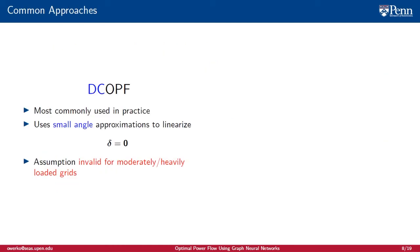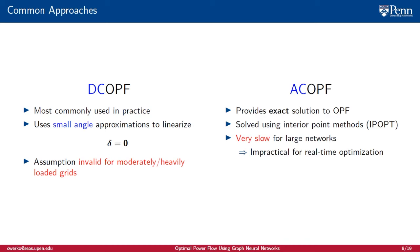Broadly, there are two main approaches to solving optimal power flow. DCOPF uses small angle approximations to linearize the problem. While commonly used in industry, this assumption breaks down when the grid is moderately loaded. On the other hand, ACOPF provides the exact solution, usually using interior point methods. It is very slow for large networks, which makes it impractical for real-time optimization.